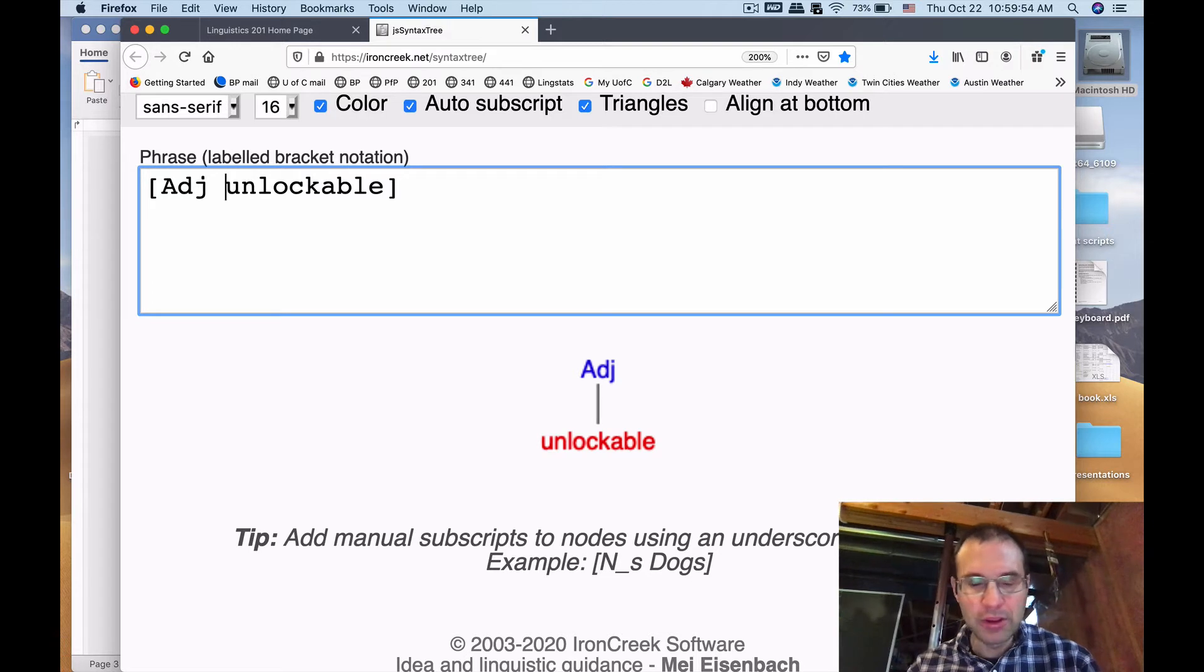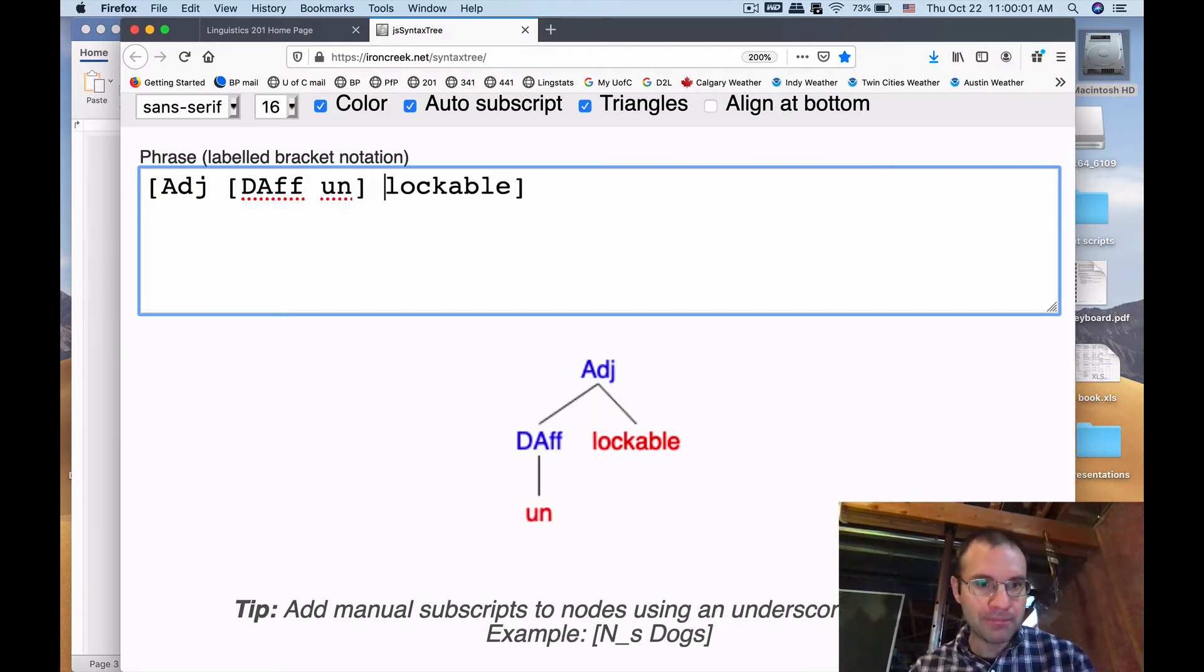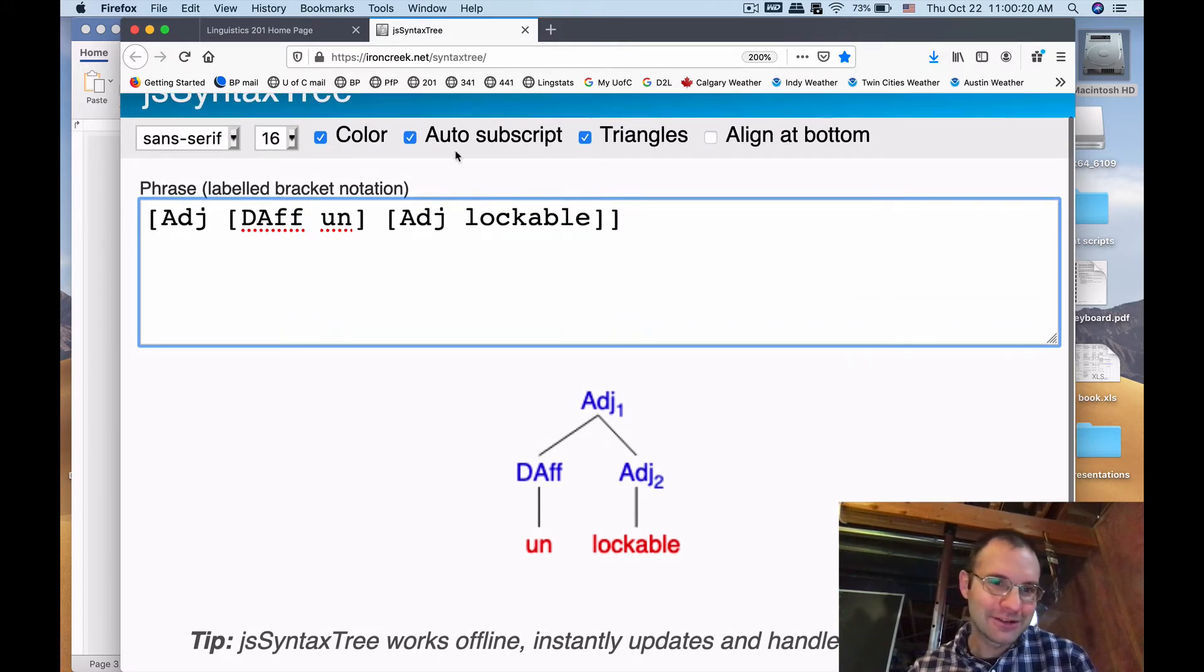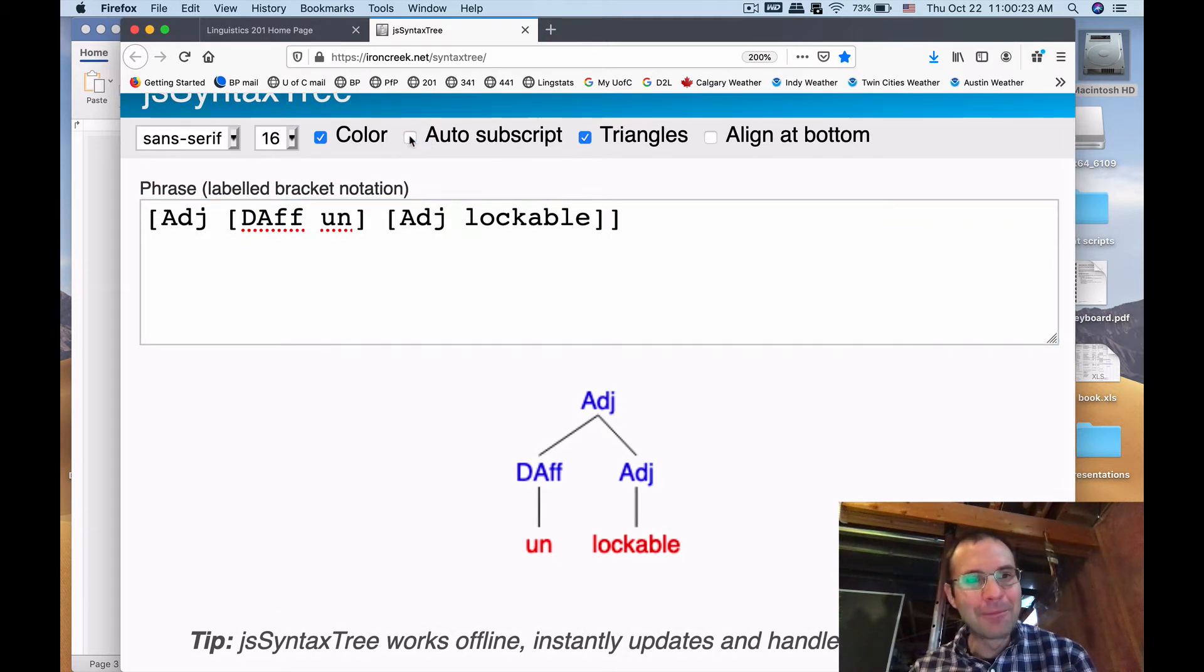I'm going to simplify things here and get rid of all these brackets and just put unlockable. It's labeled as an S, but it's not a sentence, it's an adjective. So I just have two square brackets around the word unlockable. The first part of this is labeling the part of speech, the lexical category as an adjective. But we want to break that down.